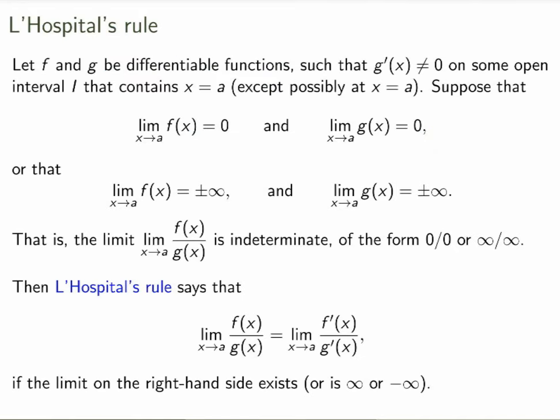It turns out that there is, and this is called L'Hôpital's rule. So suppose you have two functions f and g that are differentiable. You need to assume that the derivative of g is not 0 in some open interval that contains the point where you're going to take the limit. Now the statement is: if you take the limit of the quotient of the two functions and it turns out to be of the type 0 over 0 or infinity over infinity — so in other words the limit of f is 0 and the limit of g is 0, or both limits are plus or minus infinity — then L'Hôpital's rule says that the limit as x goes to a of the quotient is the exact same thing as the limit as x goes to a of the quotient of the derivative functions. This is useful because this may actually be possible to evaluate.